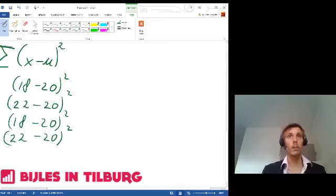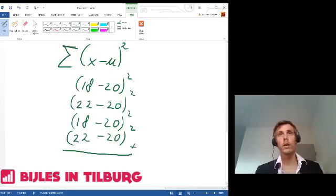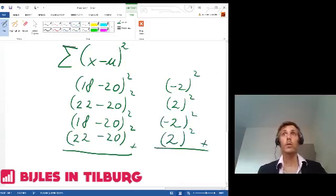Now, sum these up. This will equal (18 minus 20) squared equals (-2) squared, plus (22 minus 20) squared equals (2) squared. 18 minus 20 equals minus 2, squared. And 22 minus 20 equals 2, squared.